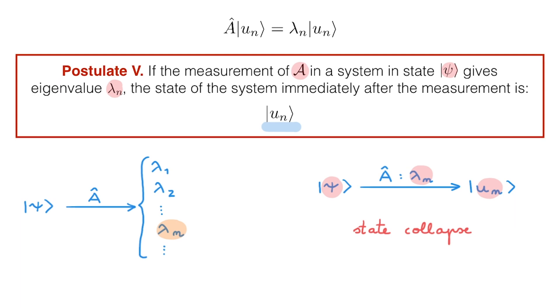This postulate has profound implications, and is one of the reasons why quantum mechanics often appear so counterintuitive. It is telling us that the very act of measuring some property of a quantum system has a dramatic effect on the system that we're measuring. It changes its state from whatever it was before the measurement to a completely new state.